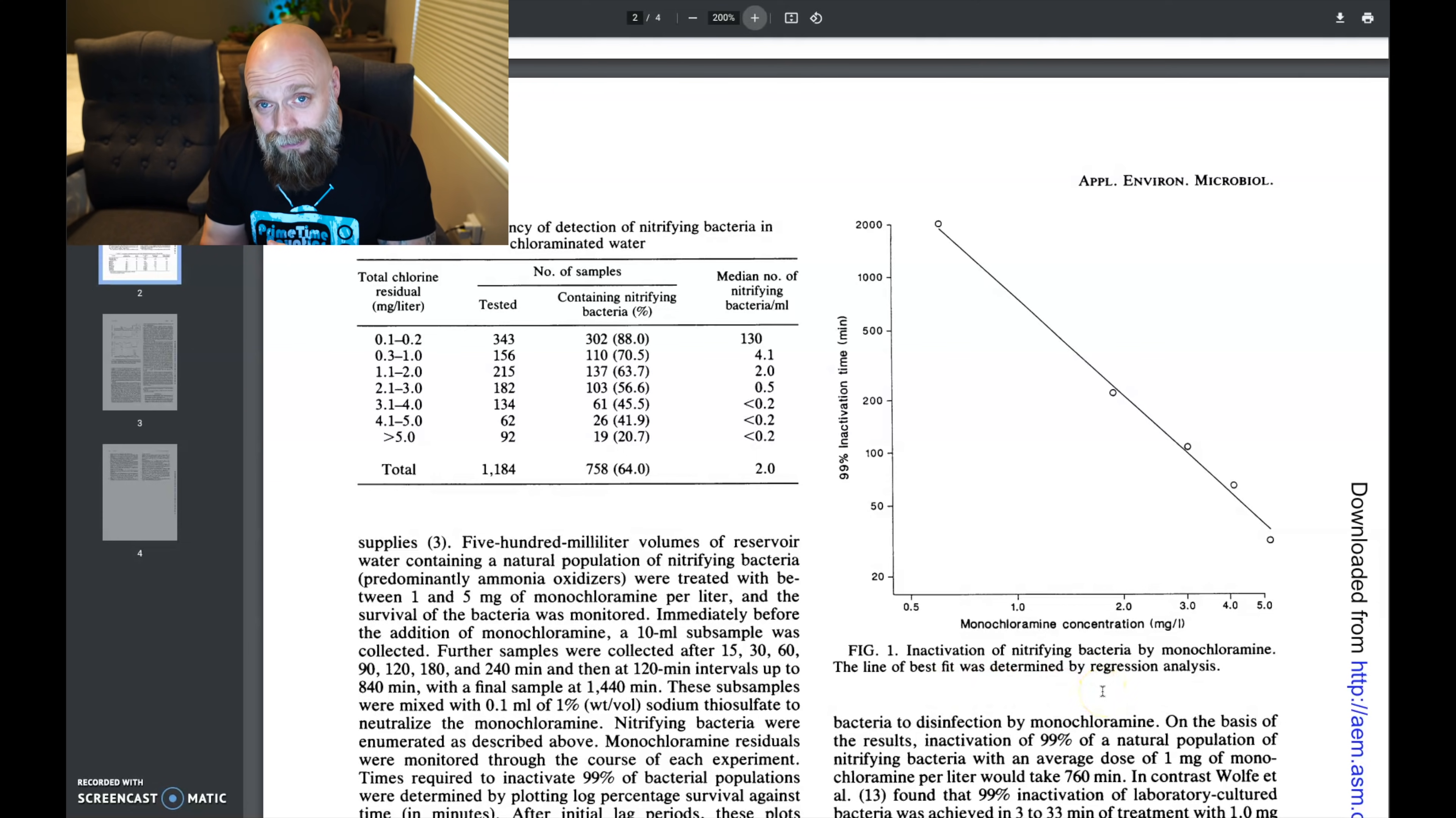All right, so these are the microbes that are responsible for the cycle inside of our aquariums. This is the Nitrobacter, the Nitrosomonas-type microbes. This is a line of best fit and was determined by regression analysis. And so here's the important point for this figure. We don't have to understand the line of best fit and all this stuff. Now, we just need to understand two things. On the x-axis, we've got the monochloramine concentration in milligrams per liter that goes up to 5. And on the y, we have 99% inactivation time. In other words, the amount of time it took in minutes for 99% of the microbes in that environment to be killed by chloramine based on the concentration on the horizontal axis.